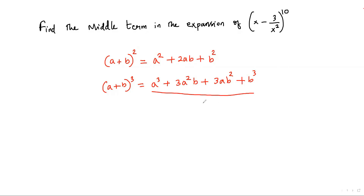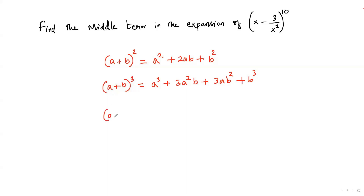The expansion contains 4 terms, so the number of terms in the expansion is more than the exponent by 1. If the exponent is 2 the expansion has 3 terms; if the exponent is 3 the expansion has 4 terms. For the binomial (a + b)^n, the expansion will contain n + 1 terms.